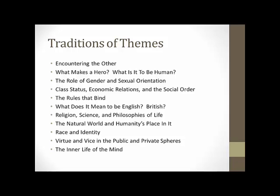Even when race isn't explicitly mentioned, racial thinking shapes characterization in subtler ways — even in something like Paradise Lost. Virtue and vice in the public and private spheres is another major running theme: the creation and separation of public and private, and what it means to be a good person. And finally, the theme of the inner life of the mind — that's a major emphasis for the modernists, but it's a development we've been tracking all semester, as writers move more and more internally, really interested in what it means to be human through some sense of interiority rather than just outward actions or behavior.